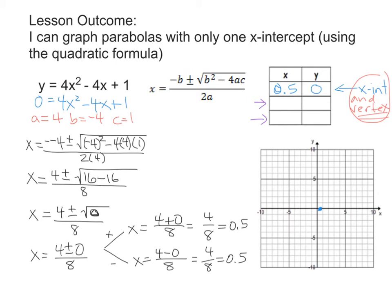Our vertex is at 0.5, so we can pick any value to the right and one value to the left and just plot those points. Maybe go just 1 over to the right and plug in a 1 for x, and then plug in 0 as the whole number to the left, and find out what those y-values would be. I could have picked any x-values, but I chose 1 and 0.